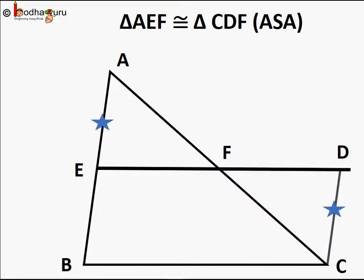So AE is equal to CD. But we know AE is equal to BE, as E is the midpoint of AB. So BE is equal to CD.